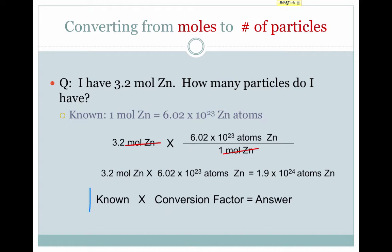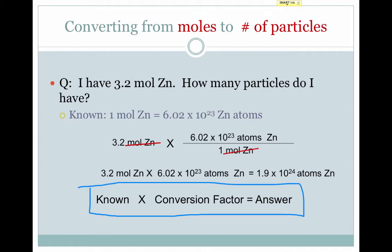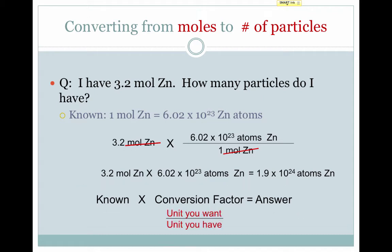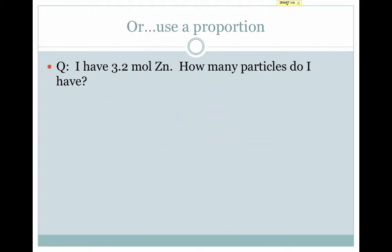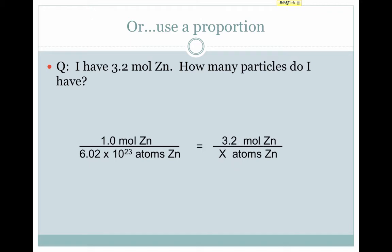The pattern here was: we took the known, multiplied it by a conversion factor, and got an answer. The conversion factor had the unit we wanted on top and the unit we had in the given on the bottom. If you don't like to use conversion factors, you can also use a proportion — it's your choice. We know that one mole of zinc equals 6.02 times 10 to the 23rd atoms of zinc, so we can set that equal to 3.2 moles of zinc over x atoms of zinc. Solve for x and we get the same answer.